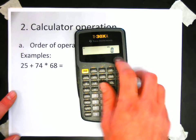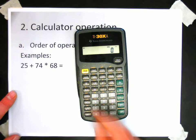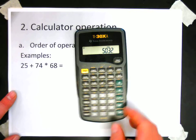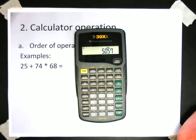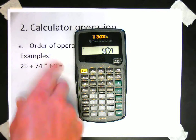Let me try that again. So 25 plus open parentheses, 74 times 68, close parentheses, and then press equals. So by doing it that way, I make sure that my calculator does the multiplication before the addition.